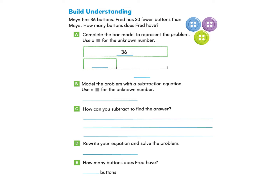We will start under Build Understanding. Maya has 36 buttons. Fred has 20 fewer buttons than Maya. How many buttons does Fred have? Let's take a look at Part A: Complete the bar model to represent the problem. Use a square for the unknown number.